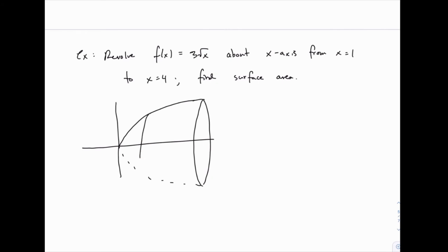Specifically, we're starting at 1 and going to 4. So here's x equals 1, and here's x equals 4. So we're looking for this surface area on the outside here. All we need to do is plug that into the formula.